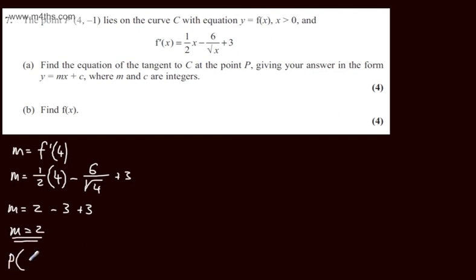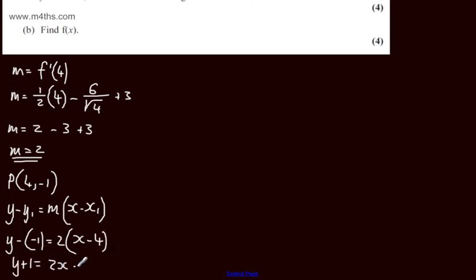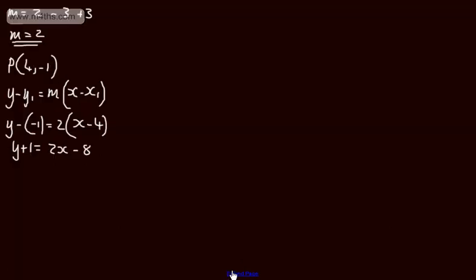We've got the point that it goes through, P, which is 4 comma minus 1. So we simply need to sub these values into the equation of a straight line. I'm going to use y minus y1 equals m the gradient multiplied by x minus x1. You can of course use y equals mx plus c. So we'll have y minus minus 1 equals 2x minus 4. So on the left y plus 1, on the right 2x minus 8. So we can write this in the form y equals mx plus c as y equals 2x minus 9.